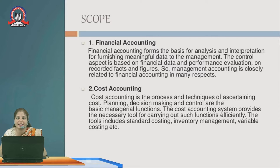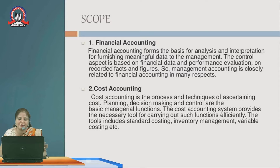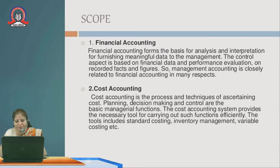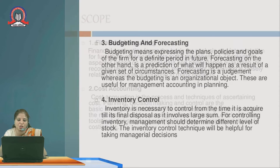The control aspect is based on financial data and performance evaluation on recorded facts and figures. Management accounting is closely related to financial accounting — unless financial accounting is done, management accounting cannot be prepared. Cost Accounting is a process and technique of ascertaining cost. Planning, decision making, and control are the basis of managerial functions. It helps to carry out functions efficiently and includes tools such as standard costing, inventory management, and variable costing.